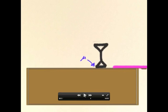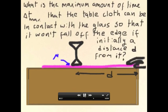So, here's the problem I want to pose to you. If the glass is sitting a distance d from the edge of the table, what is the maximum amount of time, delta t max, that the tablecloth can be in contact with the glass, so that the glass won't fall off the edge of the table if placed initially at a distance d?